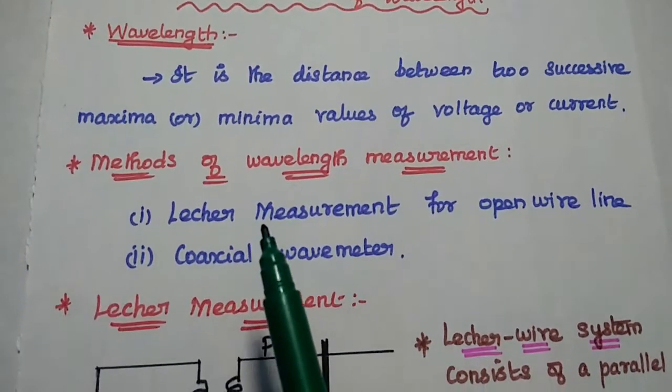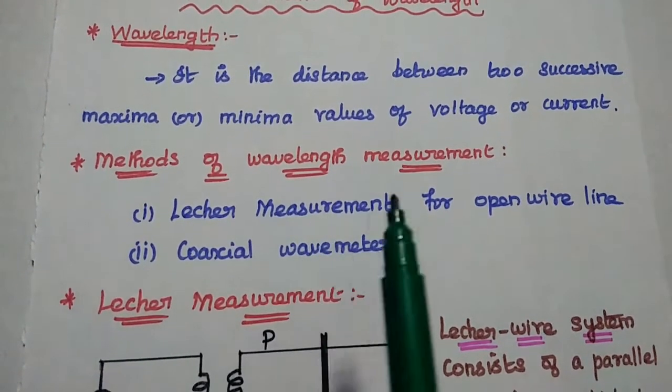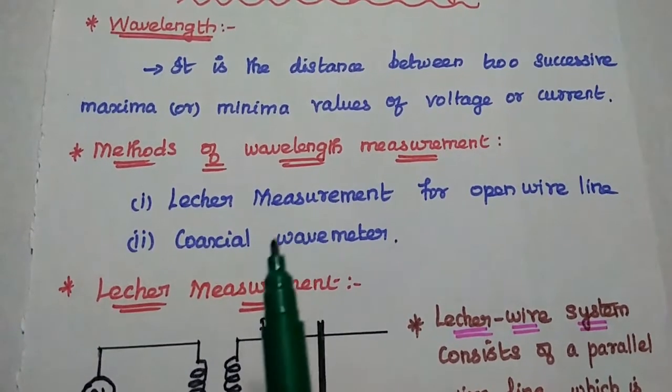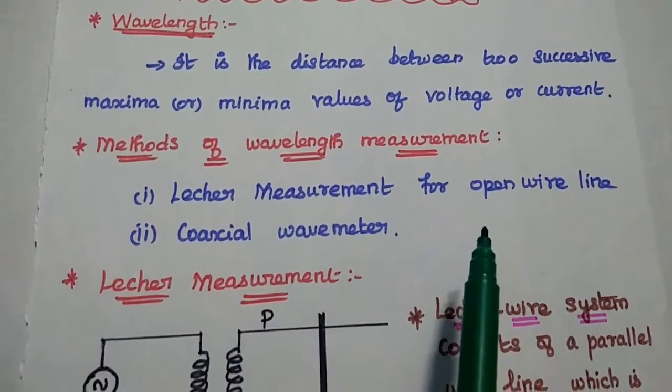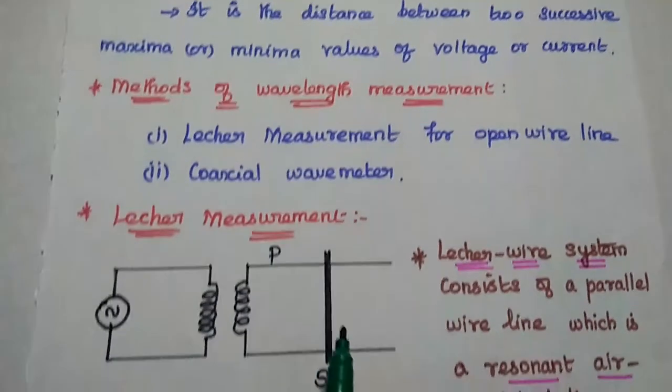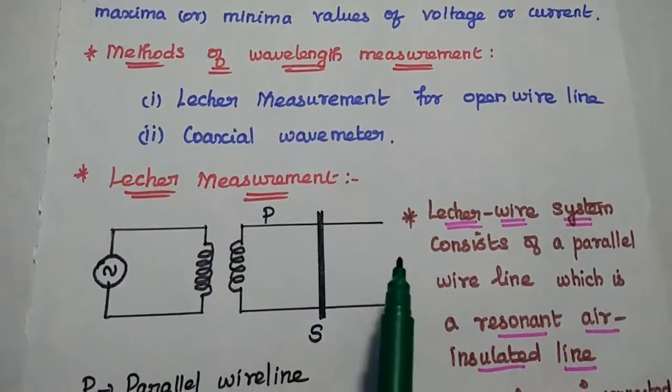There are two methods used to measure wavelength in the transmission line: Lecher measurement for open wireline, and coaxial wave meter. The first one is Lecher measurement.